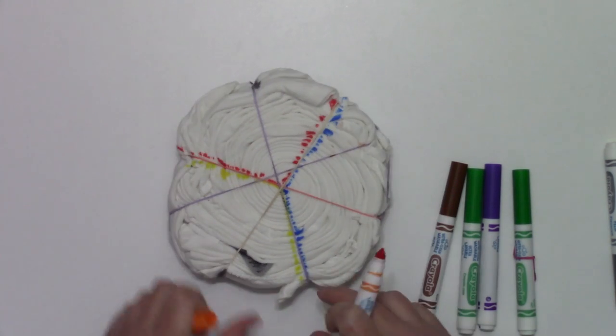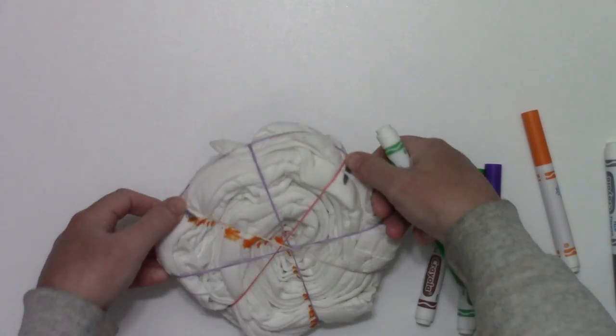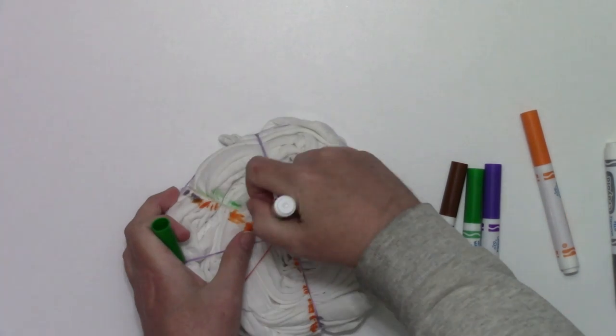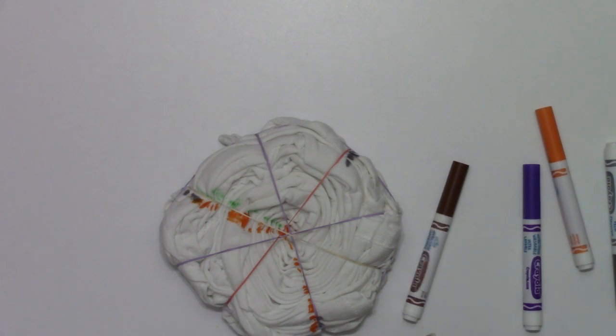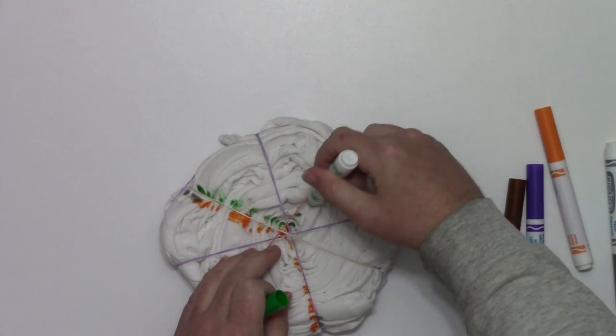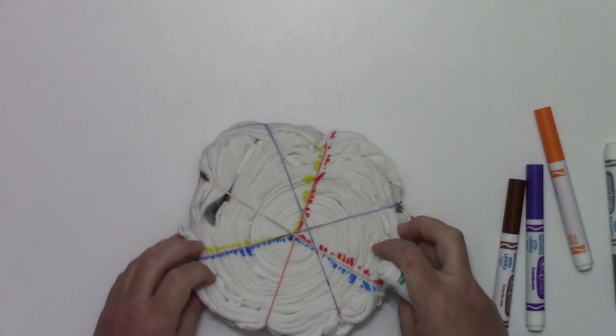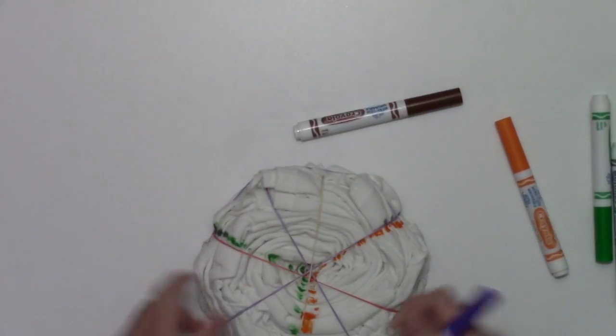So we need green between these two, blue. Oh, that green is a little bad green, I think. There we go. There's green.